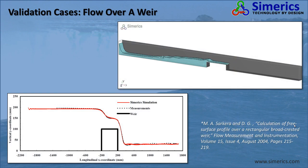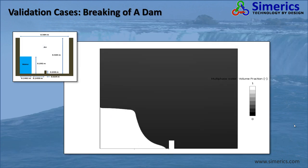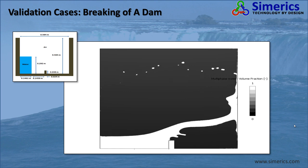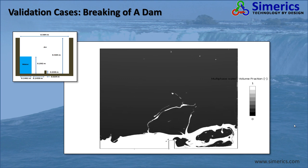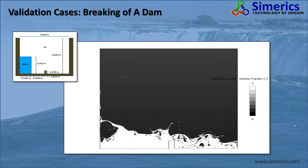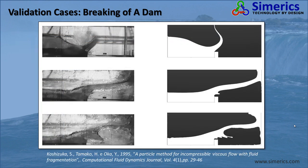Here is a validation case of flow over a weir. You can see that the predicted shape of the free surface matches experimental data almost exactly. This is another validation case of a volume of water initially static but then released to flow under the influence of gravity — this is the dam breaking problem. We see a comparison of experimental visualization versus a PumpLynx simulation; the predicted free surface matches quite well to the photos of the experiment.